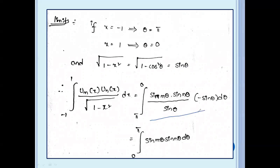Therefore, the integral from minus 1 to 1 of Um(x) Un(x) divided by root(1 minus x squared) dx equals: integral from π to 0 of sin(mθ) times sin(nθ) divided by sin θ times minus sin θ dθ.